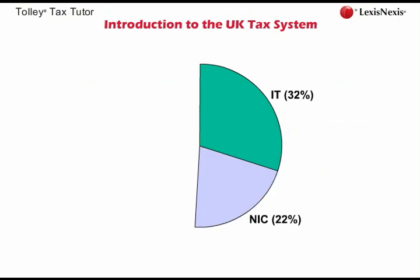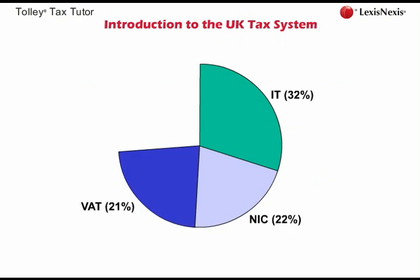The second largest earner for the government is National Insurance Contributions, or NICs. This makes up 22 percent of total government income. National Insurance Contributions are generally paid by employers and employees on earnings from employment, although NICs are also levied on self-employed persons on the profits of their trade. Value Added Tax, or VAT, makes up about 21 percent of total government revenue and is charged by businesses to customers on supplies of goods or services.